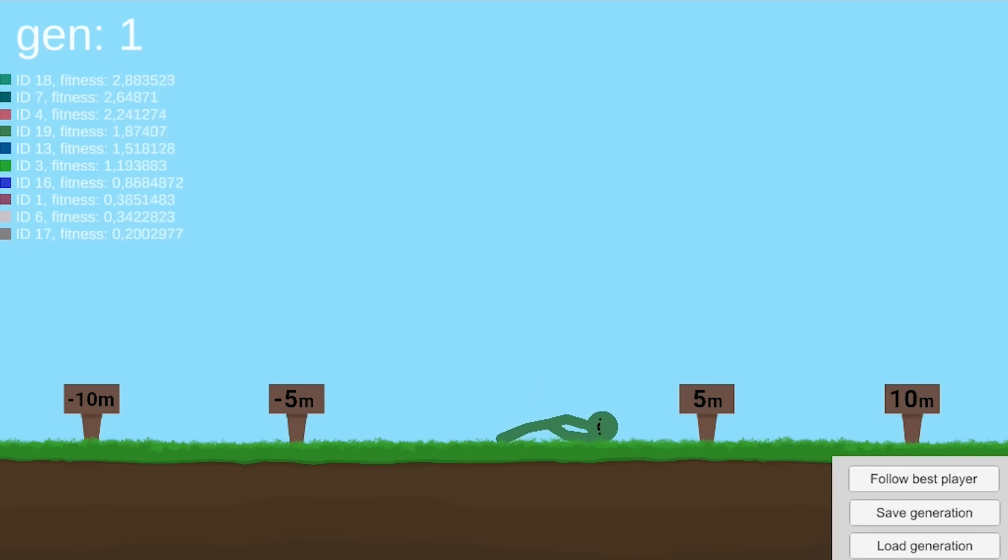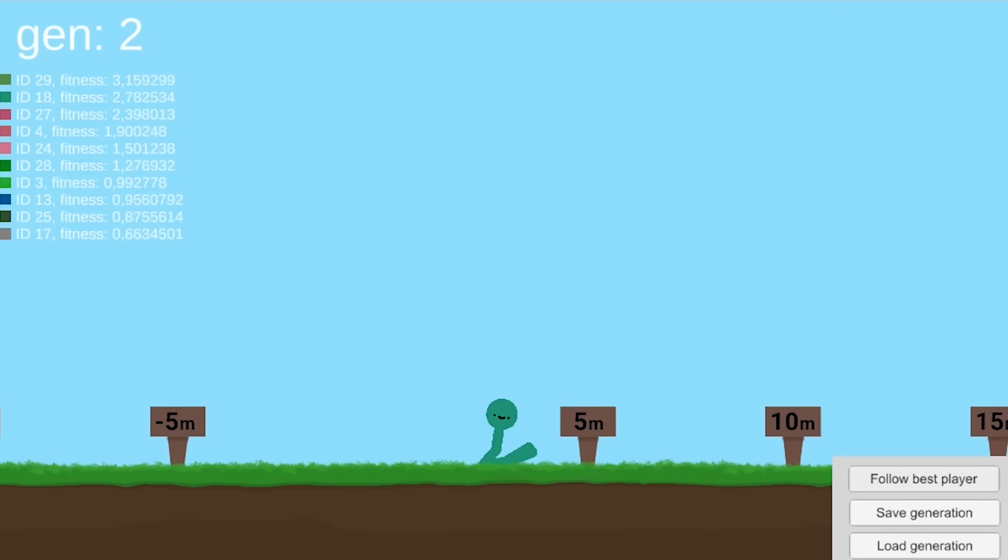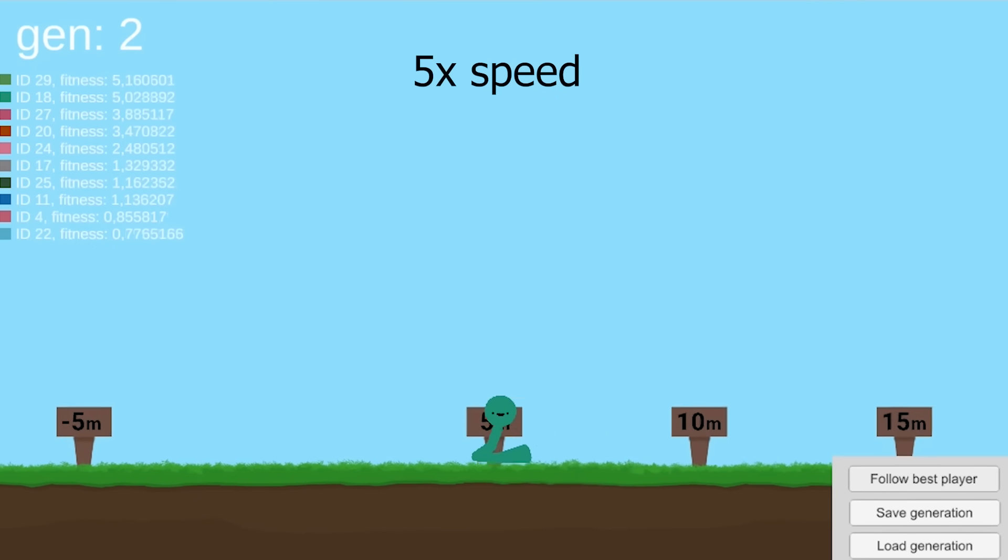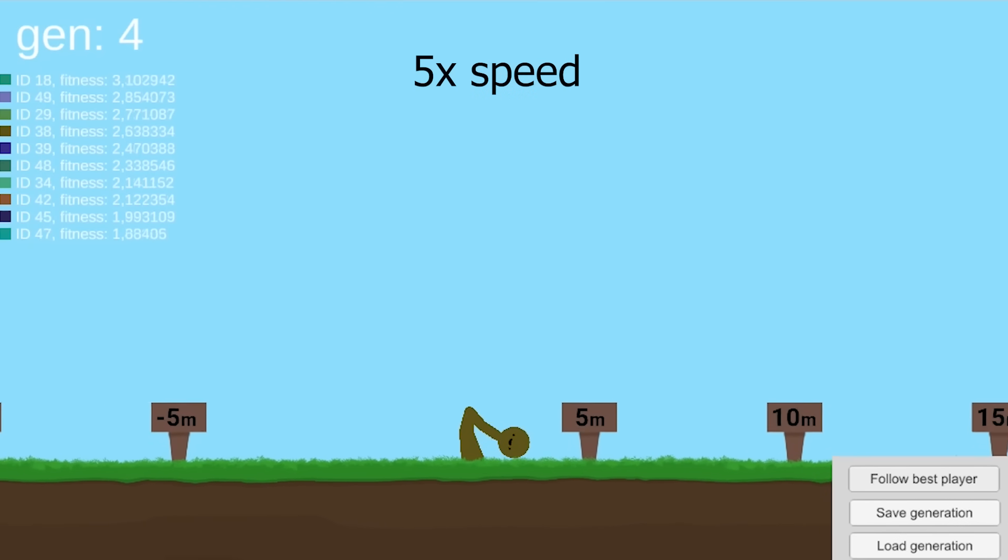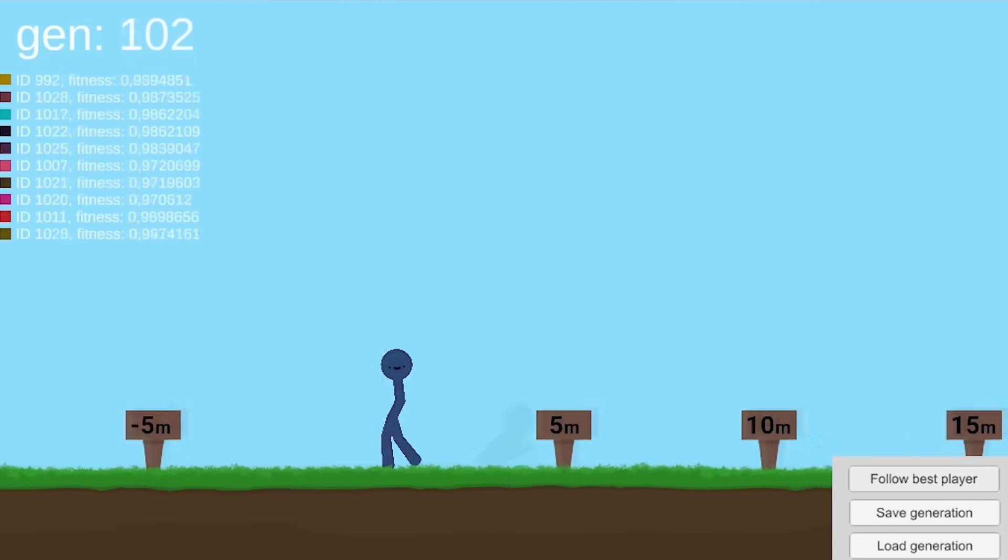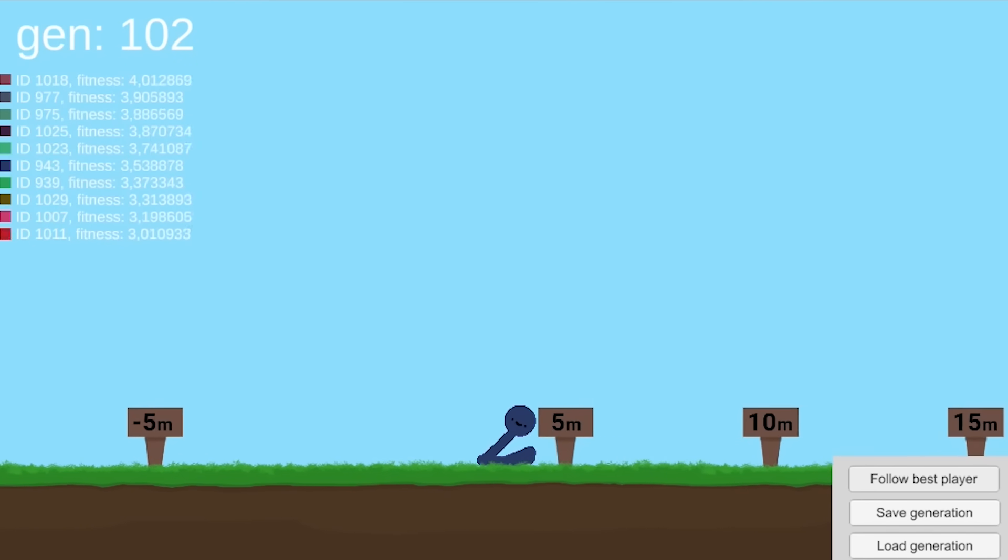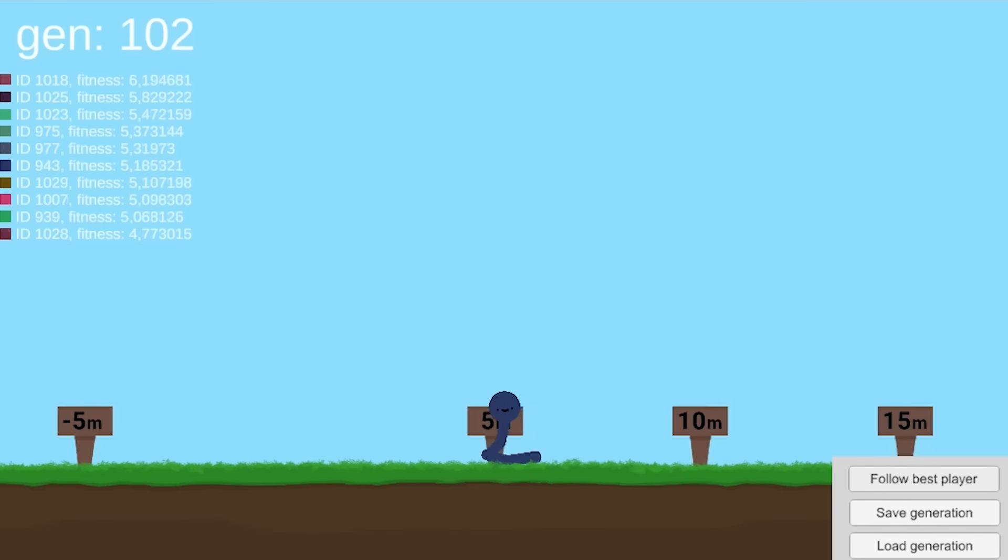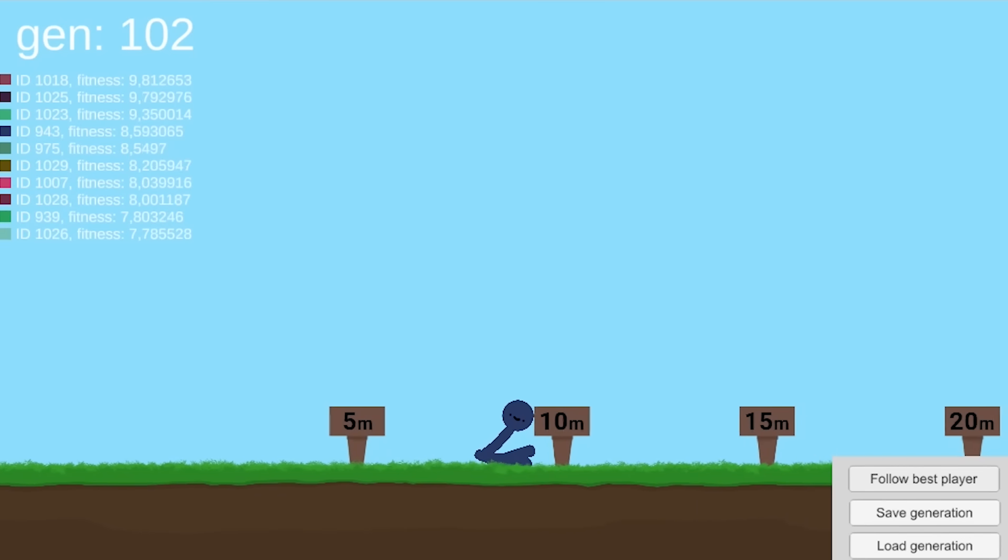So Billy starts off strong with a juicy face plant. The next generation, he figured out he would just kind of sit down and wobble forward. And after 100 generations, apparently wiping your ass along the floor is Billy's winning strategy, but he can't even make it past 15 meters, so we're gonna have to put Billy to sleep.